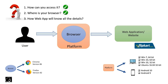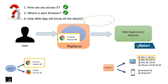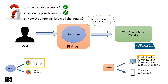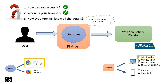Once your web application knows all these details, then only it can render its content. So let's take one combination — let's take Chrome 86, and if I'm taking laptop Windows 7 64-bit, let's put both together. That is what we call user agent. User agent is nothing but a piece of information which contains all these details: what browser you are using, what version it is, what operating system you are using like Windows 7, Windows 10, etc. All this information together, we call it user agent.